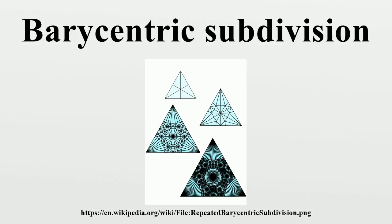The result of barycentric subdivision, when viewed as an abstract simplicial complex, is an example of a flag complex. It has one vertex for every cell of the original cell complex and one maximal dimensional cell for every flag of the original cell complex.